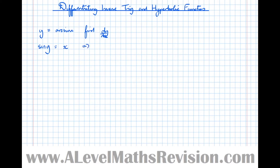So now we can actually find dx by dy. We know the differential of sin y is cos y, which means that dy by dx equals 1 over cos y — the reciprocal of that.